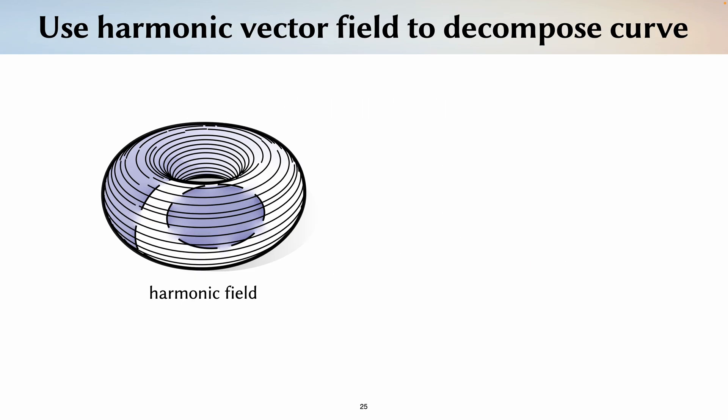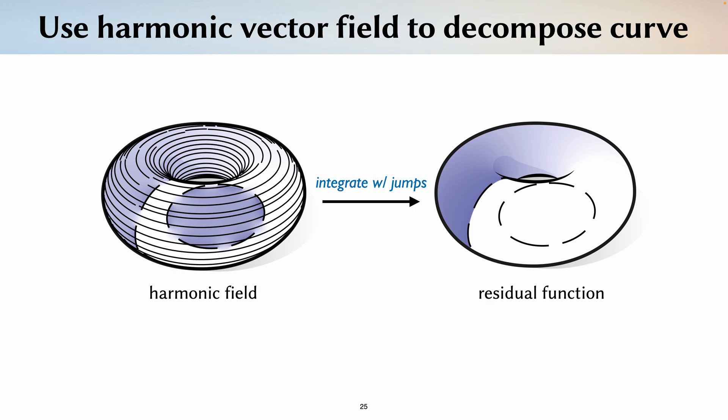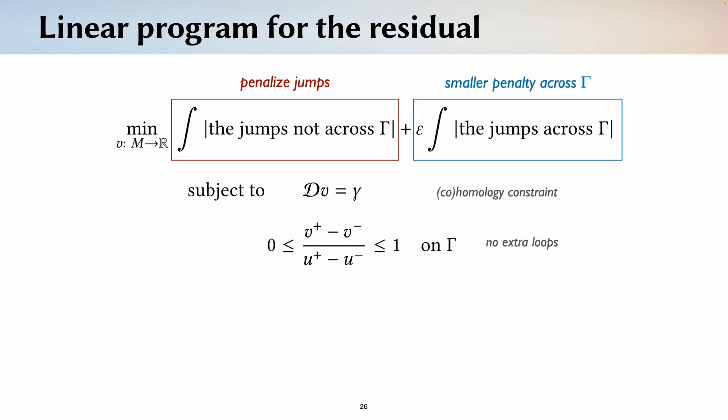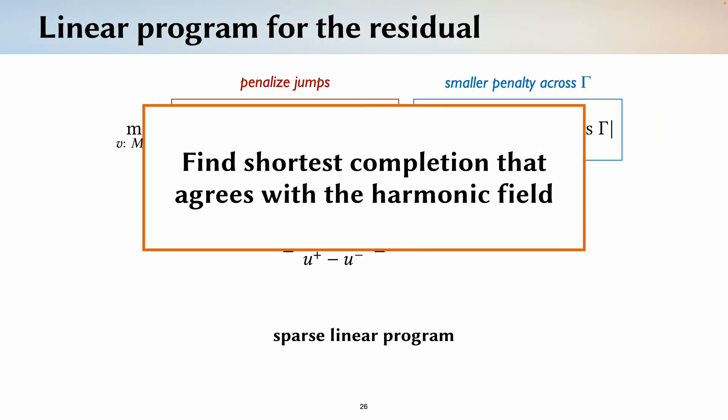Now, we just have to use this decomposition of our vector field to decompose our original curves. Because we just took a derivative, this next step will involve integrating the harmonic vector field into a residual function that best describes the vector field. And in particular, we want the discontinuity of the resulting residual function to identify the non-bounding component of the curve. This corresponds to the following optimization, which at a high level searches for the shortest completion of the curve that agrees with the harmonic vector field. And this optimization for the residual function can be solved as a linear program.